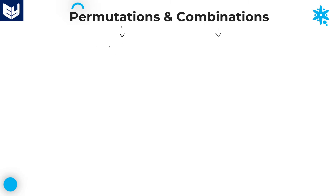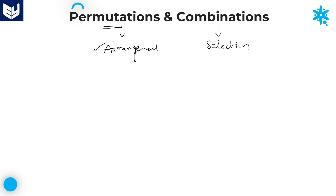Basically, permutation means it is an arrangement, whereas combination means it is a selection. Whenever we are arranging something — whether those are letters, numbers, persons, whatever it is — then we have to use the concept of permutation. And when we are selecting something, then we have to use the concept of combination.